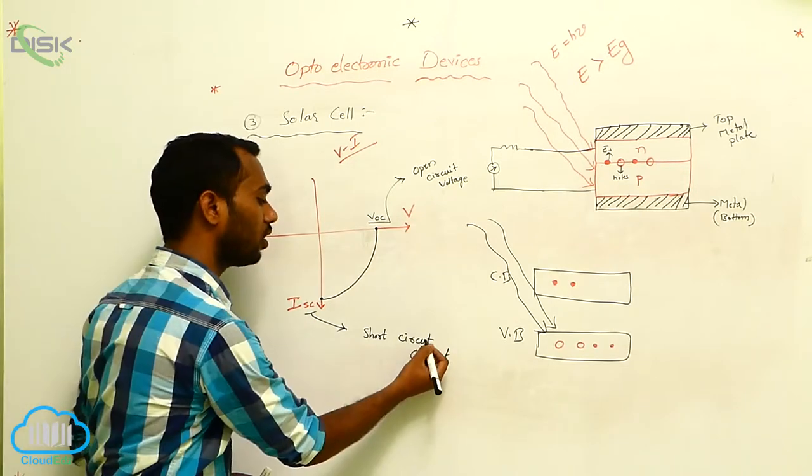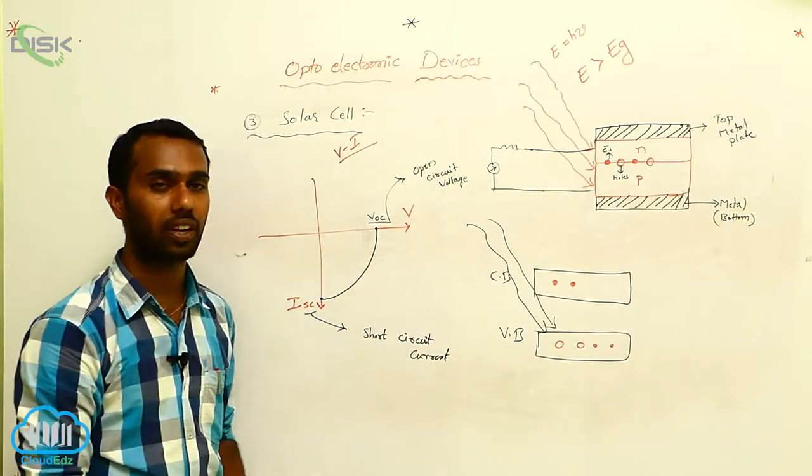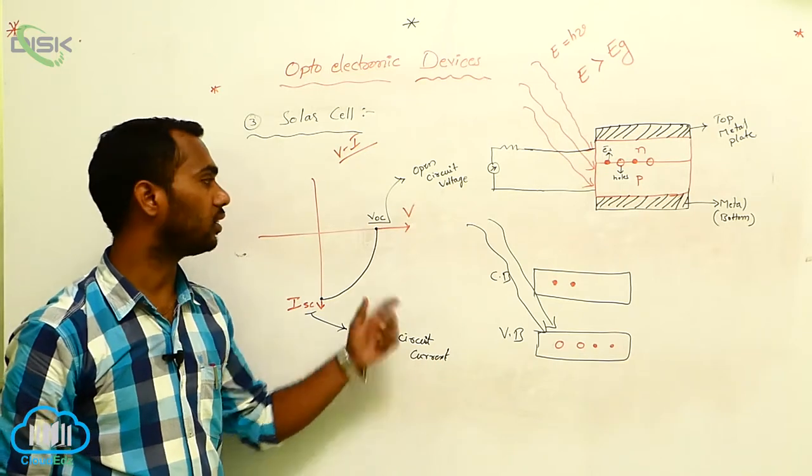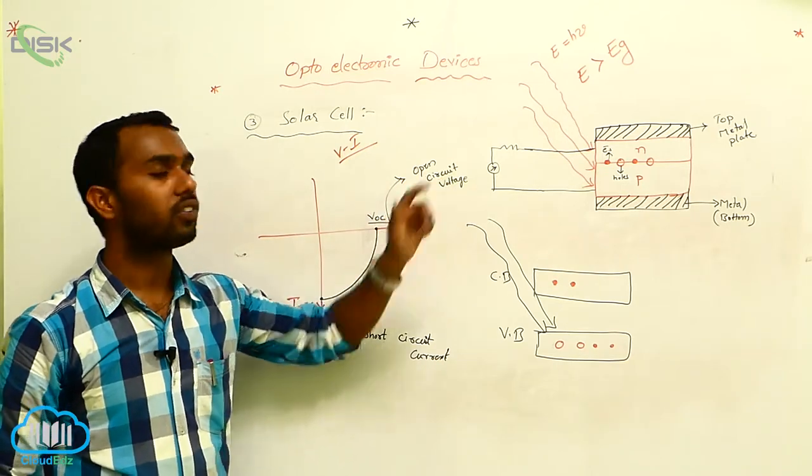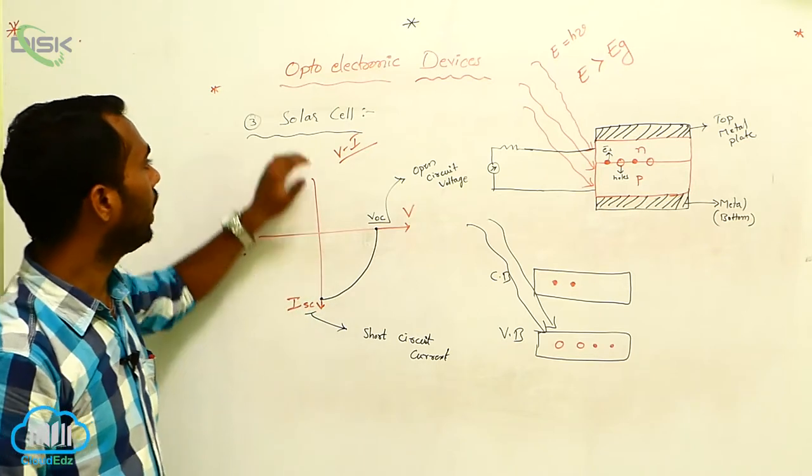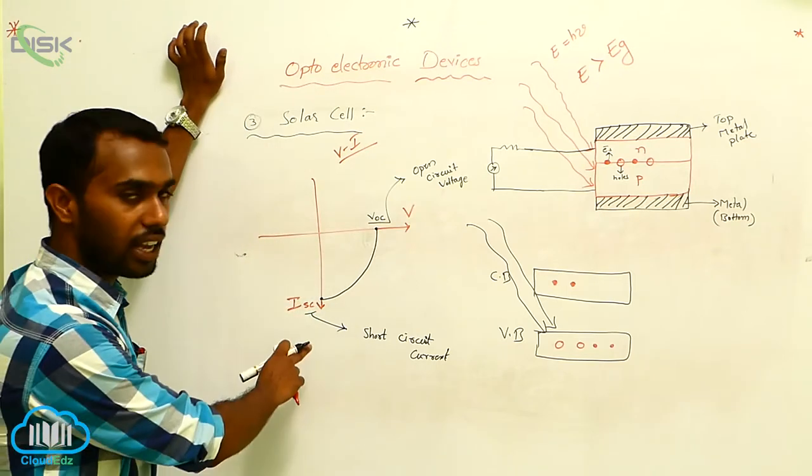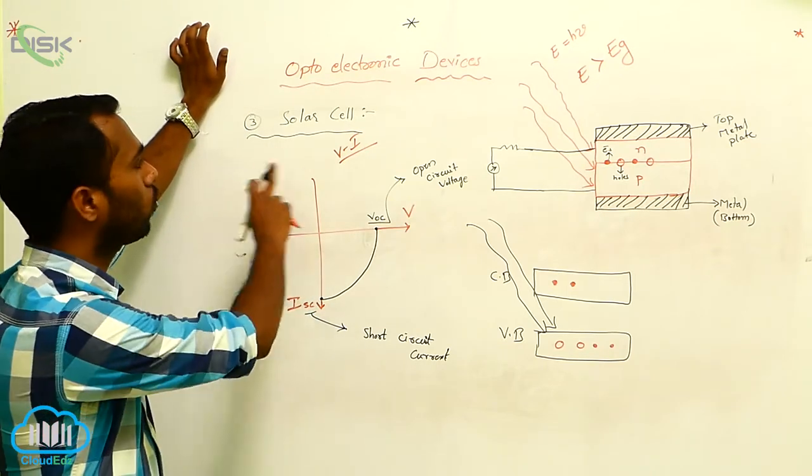This is the short circuit current, and this one is the open circuit voltage. So this is the V-I characteristics curve of a solar cell.